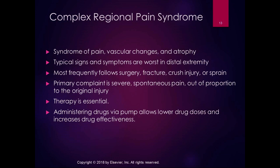CRPS is usually an aberrant response to trauma. Most frequently it follows surgery, a fracture, a crush injury, or a sprain, and the healing does not go normally. You could have all those things — surgery, fracture, a crush injury, or a sprain — and have normal healing and not go into complex regional pain syndrome.